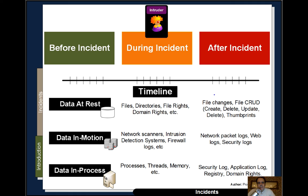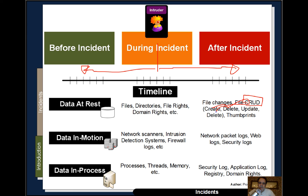We're really trying to build up a timeline — detecting when an incident is happening in real time, then tracing back before it was detected and what happened after. For data at rest, this might involve files on systems, directories, file rights, domain rights, focusing on CRUD — create, read, update, and delete operations on files. These operations define the audit trails required to detect what's happening to files and when they changed. Thumbprints give us a unique identification of a file.